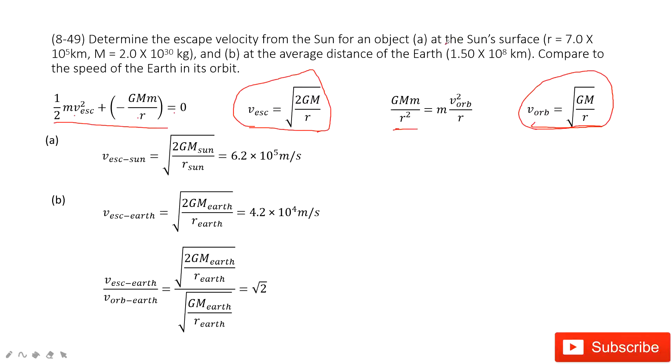Now the first part tells you the Sun's mass and asks you to find the escape velocity. So this one is very easy. We just input the known quantities, so we can get the final answer there.